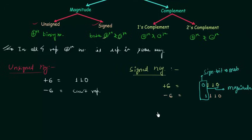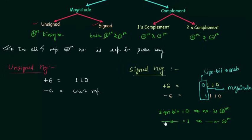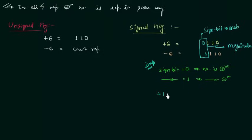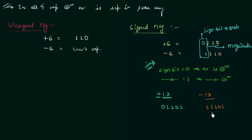If the sign bit is 0 this implies the number is positive, and if the sign bit is 1 this implies the number is negative. Let's see one more example — representing plus 13. The magnitude is 1 1 0 1, and for the plus sign I will add 0, so positive 13 in signed magnitude is 0 1 1 0 1. For minus 13, the magnitude is 1 1 0 1 and then I add 1, so minus 13 is 1 1 1 0 1 in signed magnitude.